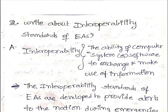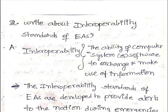What is the basic meaning of interoperability? It means the ability of a computer system or software to exchange and make use of information. You can exchange the information and make use of that information — that is known as interoperability. So now you have a basic idea of what the word interoperability means.